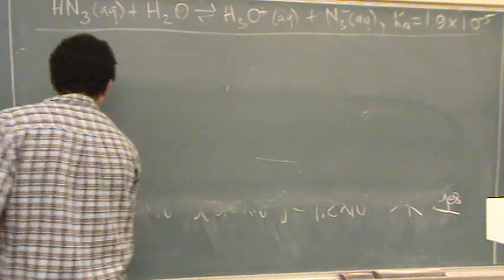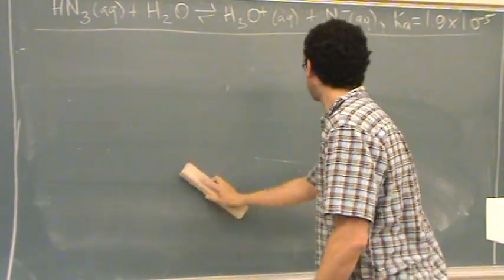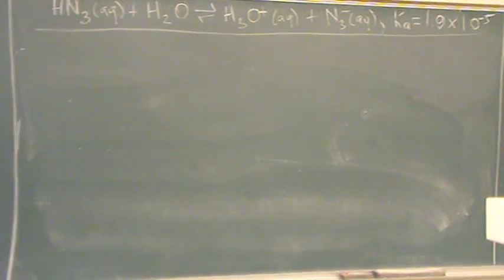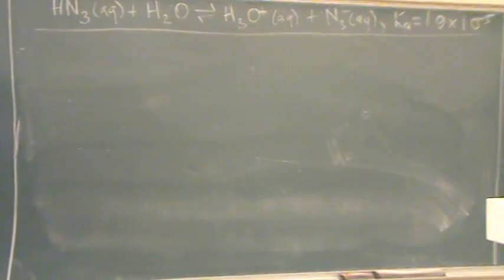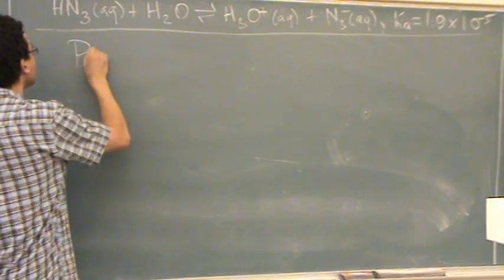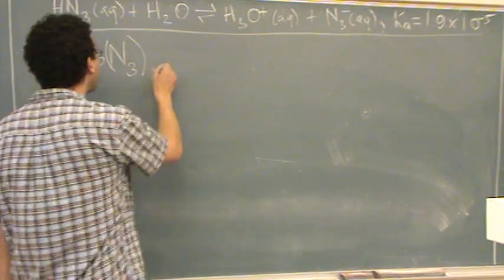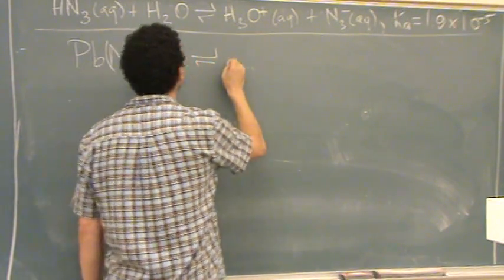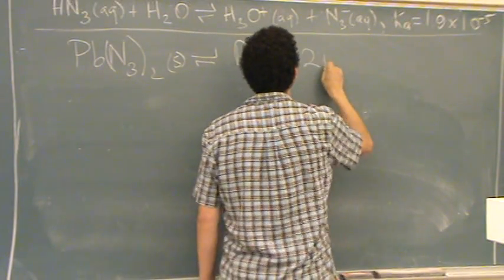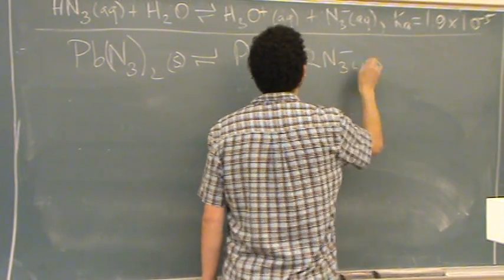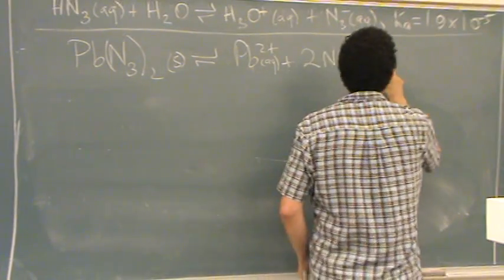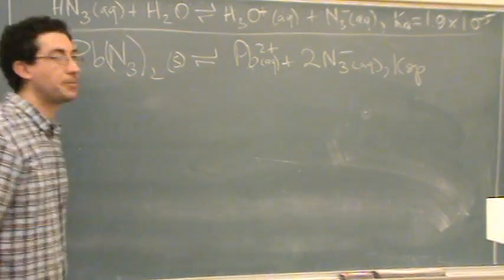So I want you to set up the ice table to solve for x. You don't have to actually solve for x though. I just want the setup, and that would get you full credit. Let's write out the lead N3. We knew that from the previous part of the problem. Let's write out the reaction again.